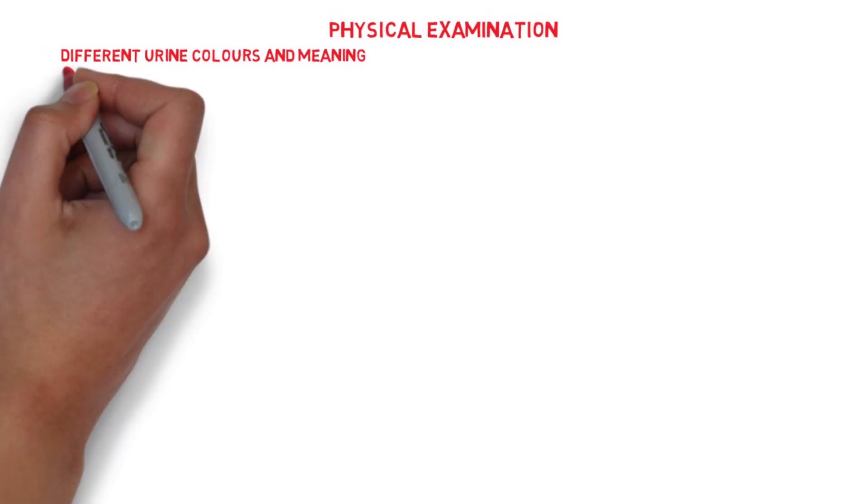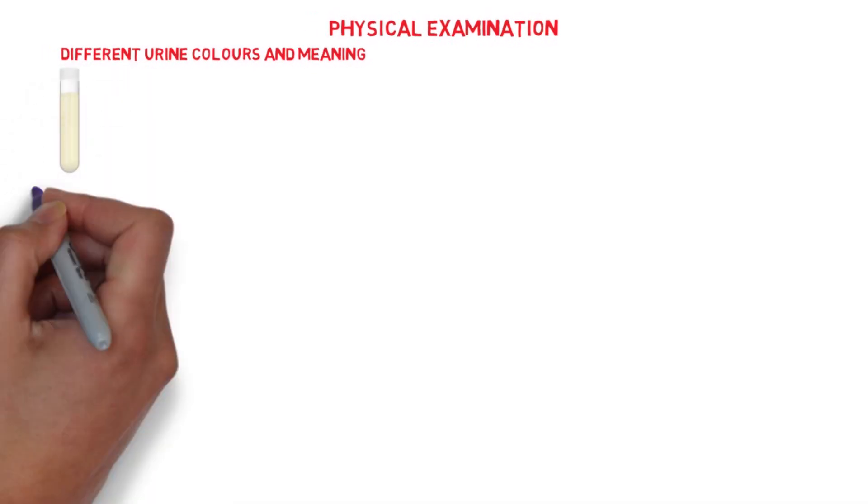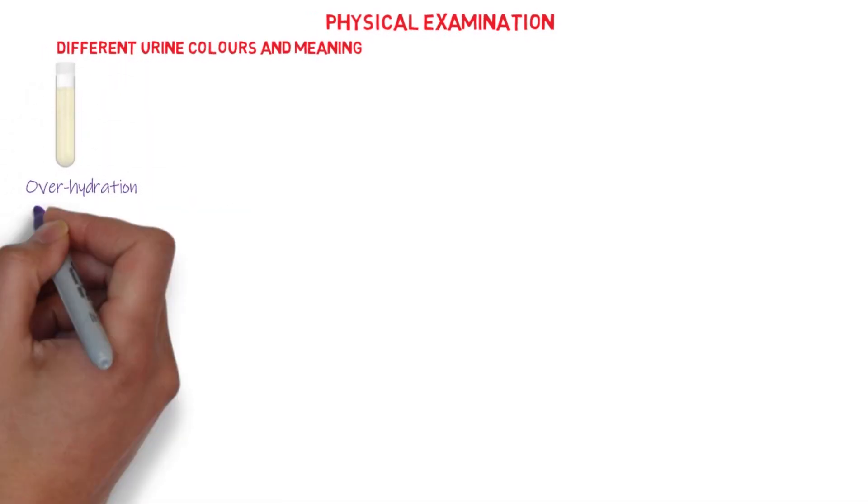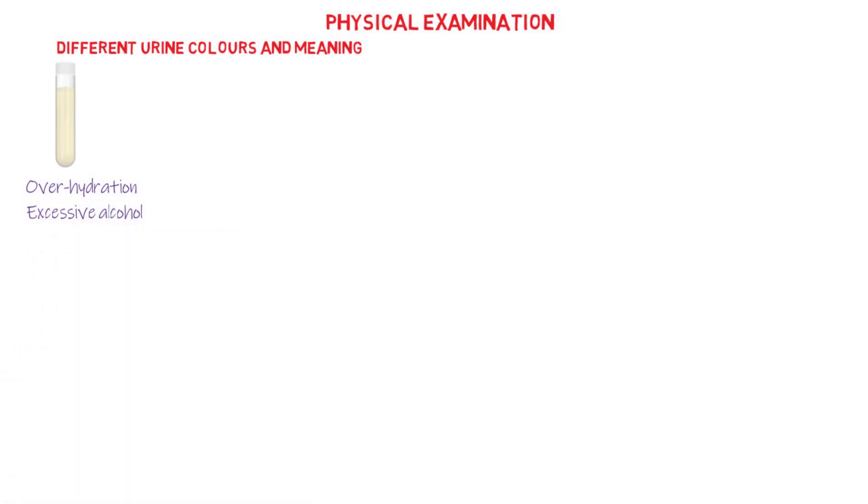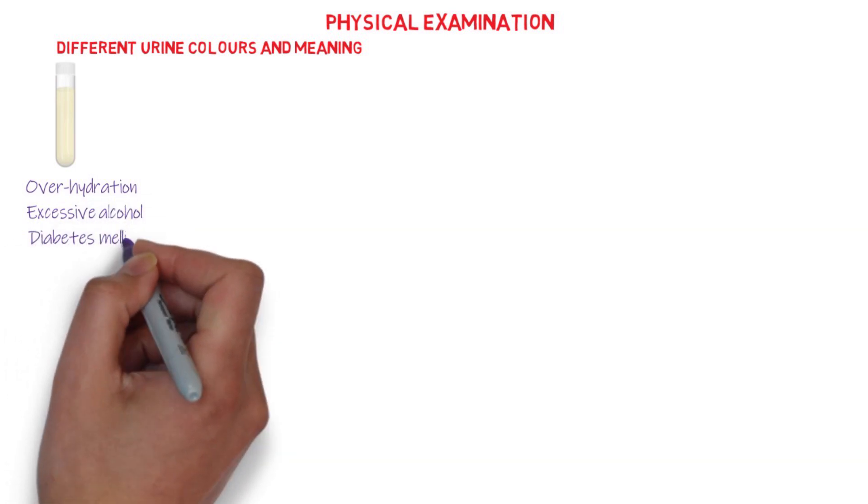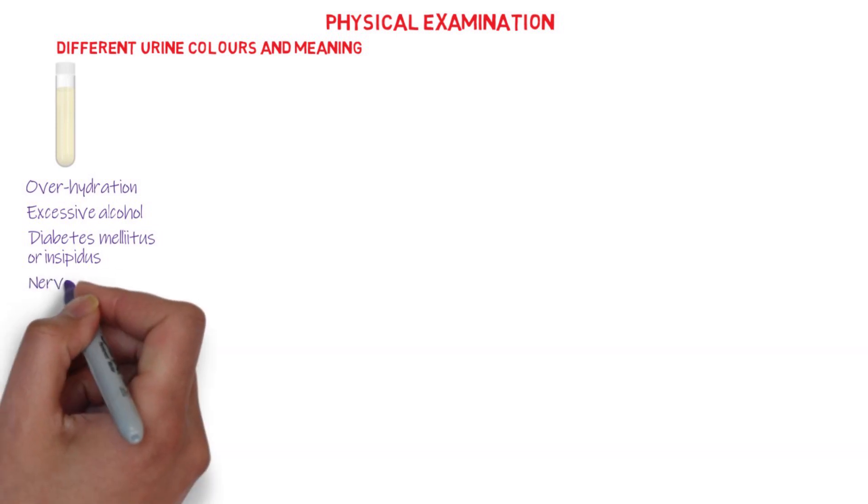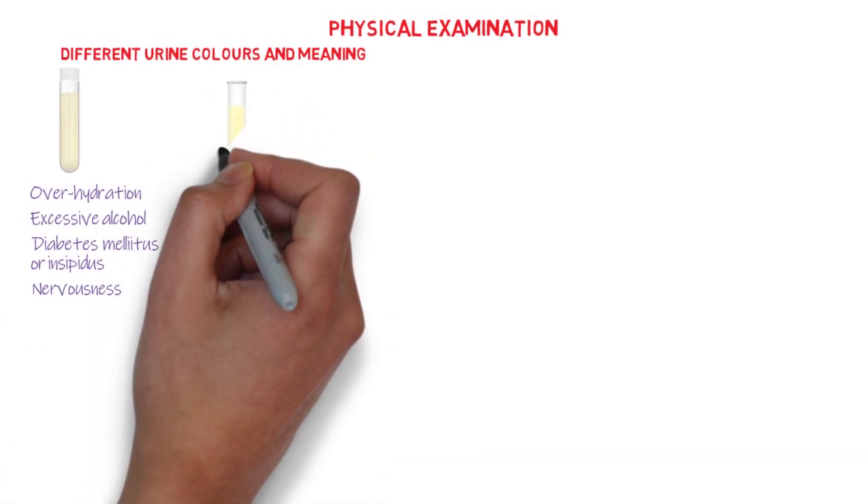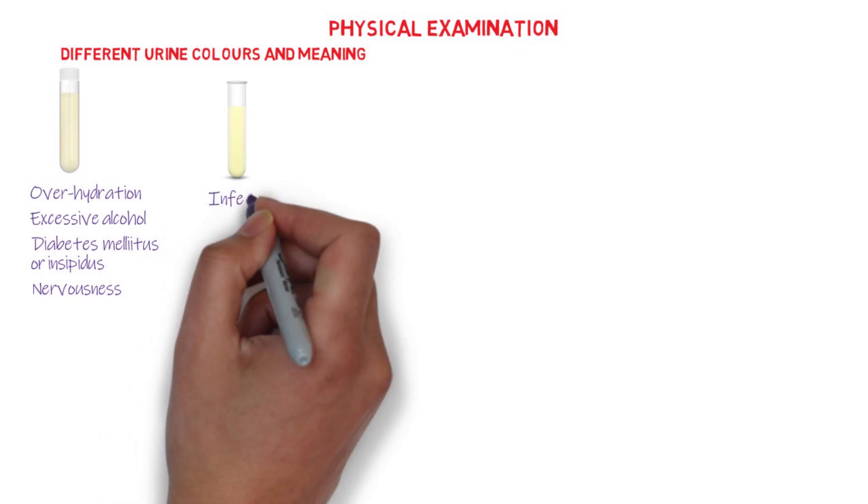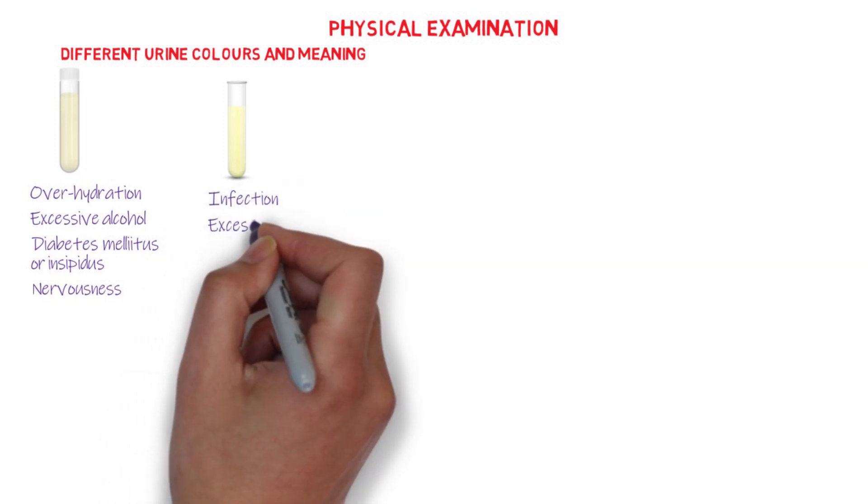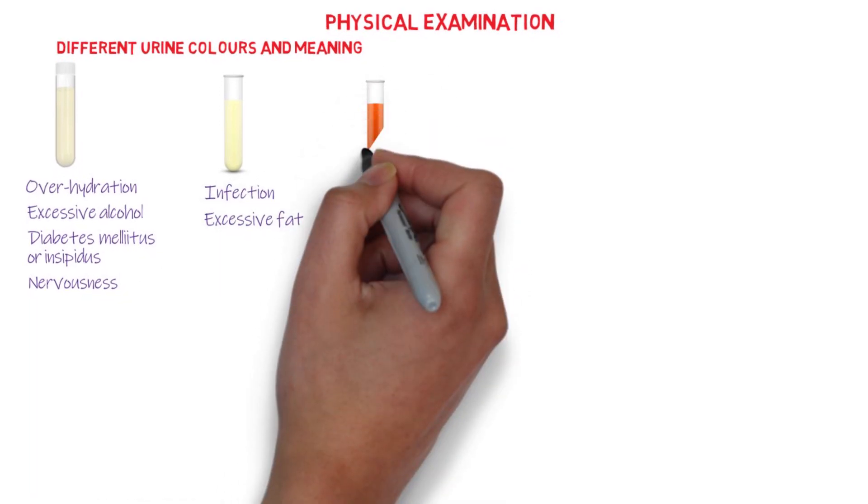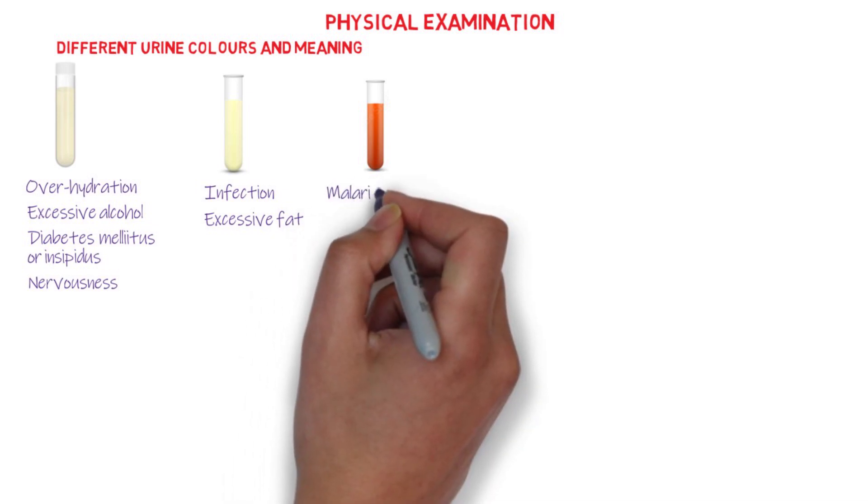A colorless urine indicates over-hydration or excessive alcohol intake, or even diabetes mellitus, or it could also be something as light as nervousness. While a milky color could suggest the presence of an infection or excessive fat in the body, a yellowish orange color indicates malaria or fever.